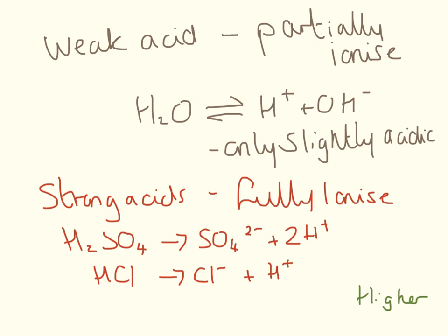You need to know the difference between a weak acid and a strong acid. A weak acid is only partially ionised — for example, in water, one in a million atoms will dissociate into hydrogen ions and hydroxide ions, making it a very weak acid, close to the neutral side of the scale. Strong acids such as sulphuric acid and hydrochloric acid are fully ionised, so we can write their equations as full reactions — when dissolved in water they produce two completely separate ions.